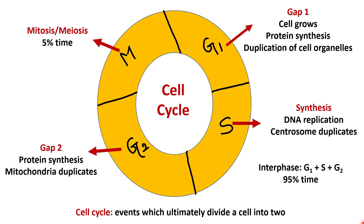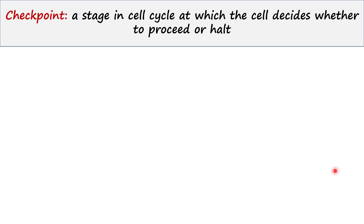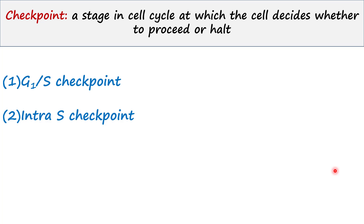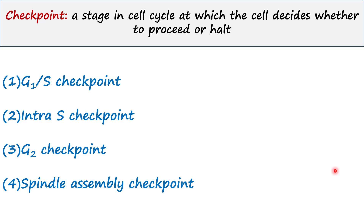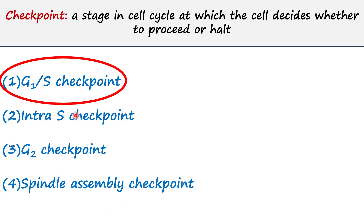So in our previous lecture, we have seen how cell cycle occurs. We have seen the cell cycle has two main phases: interphase and M phase. Interphase consists of G1, S and G2 phase. Now we will see how checkpoints work in the cell cycle. A checkpoint is a stage in the cell cycle at which the cell decides whether to proceed or halt. There are four checkpoints: G1/S Checkpoint, Intra-S Checkpoint, G2 Checkpoint, and Spindle Assembly Checkpoint. Today we will talk about the first one, the G1/S Checkpoint.